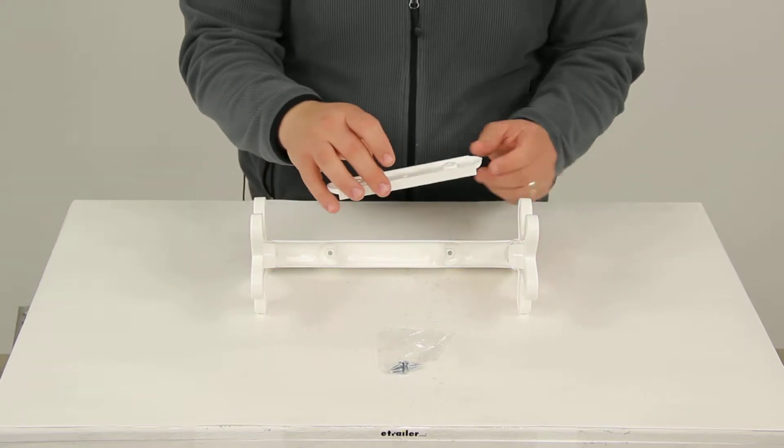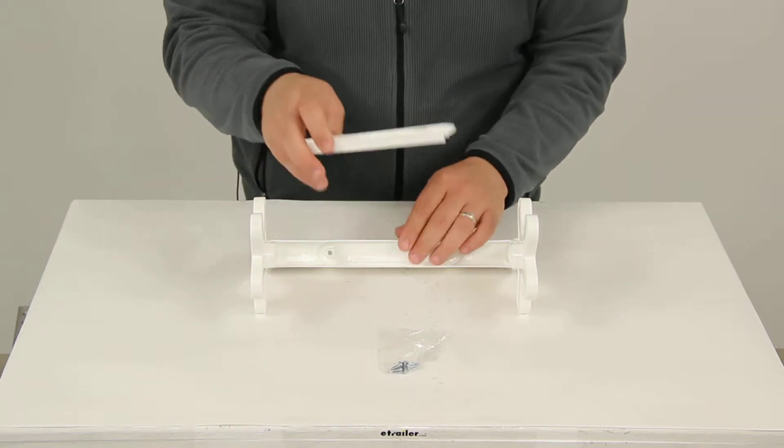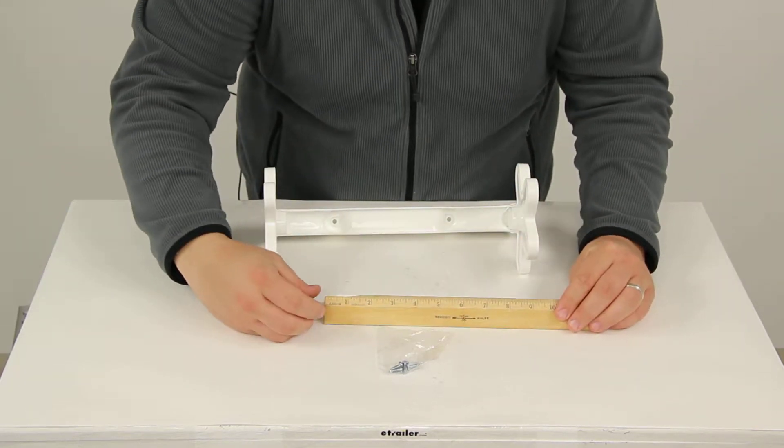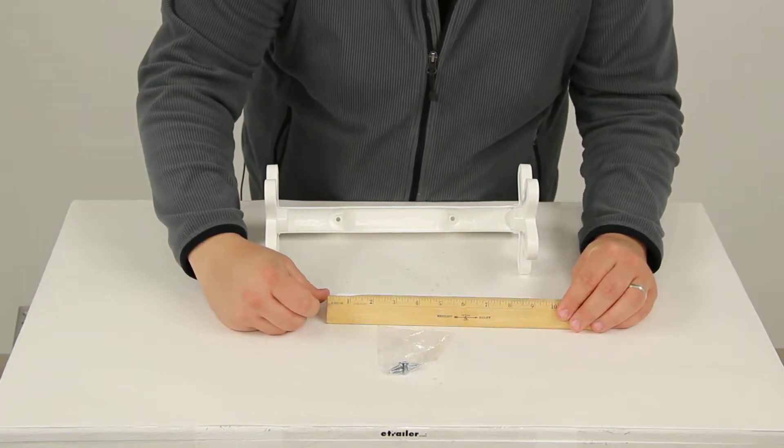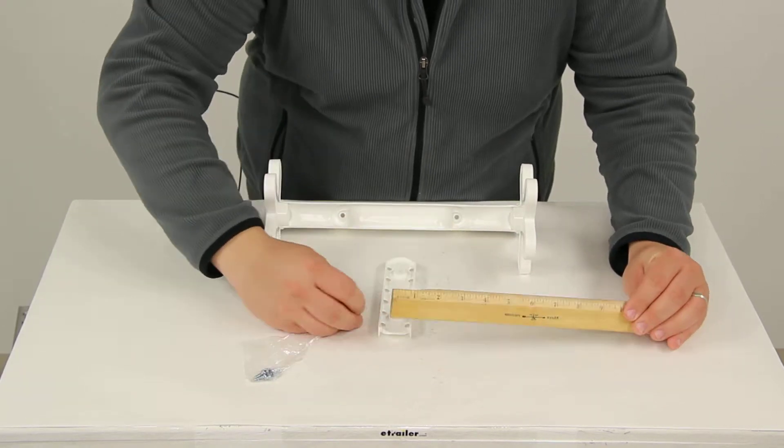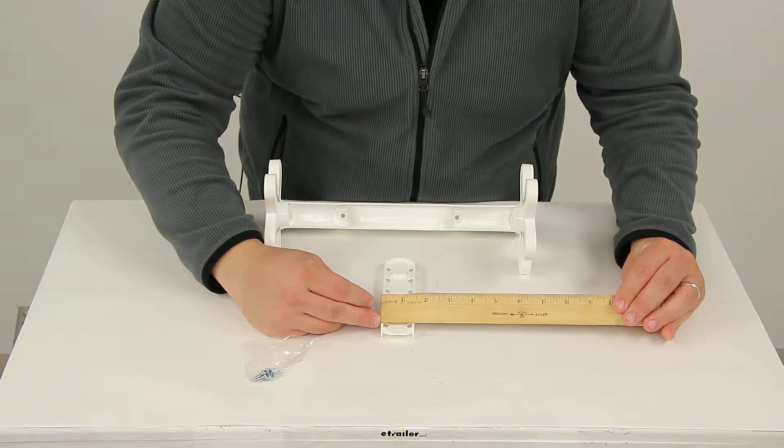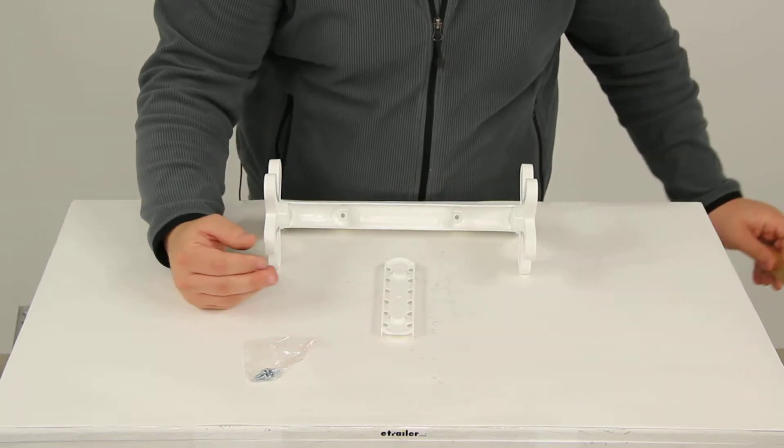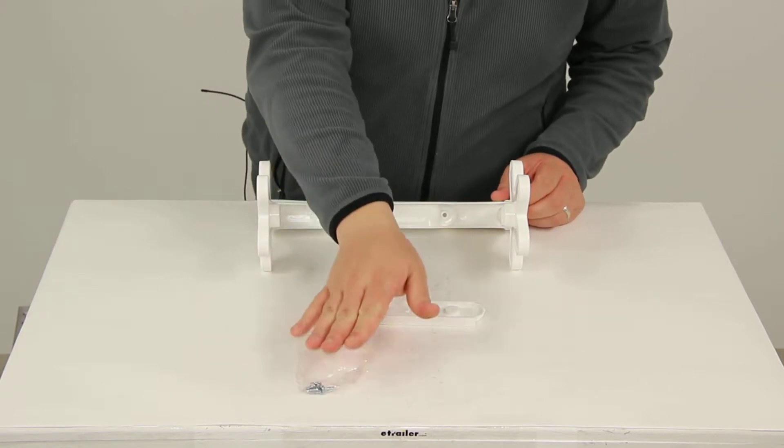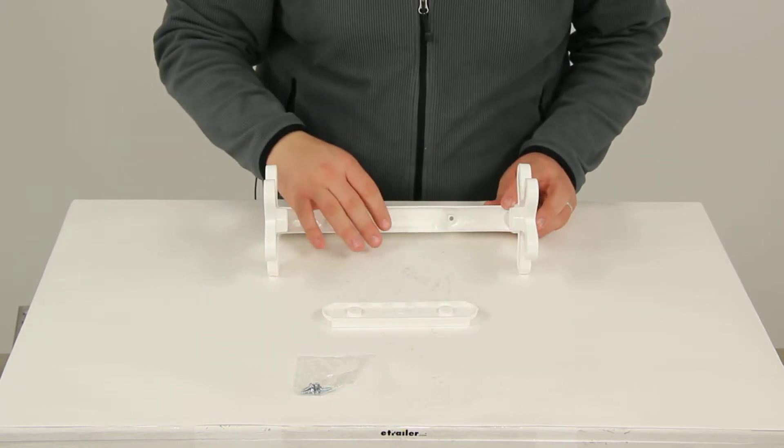It does have the mounting plate here. This is going to give us a measurement of 7 inches by 1.5 inches in width, and again that is just the mounting bracket. It does come with the hardware needed to install that.